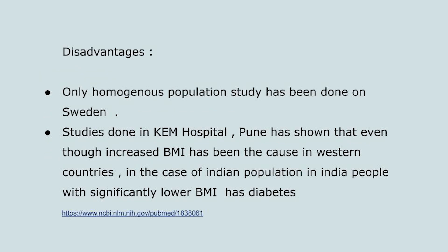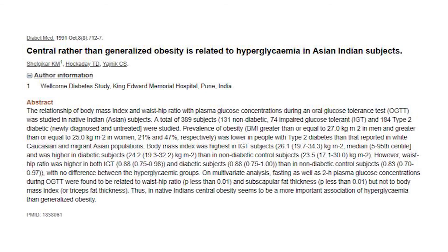A disadvantage is that this is a homogeneous population study done in Sweden, whereas diabetes is a heterogeneous disease worldwide. For example, a study done in Pune, India, showed that Indian patients had more visceral fat and higher body fat percentage compared to Caucasians of similar BMI, making them more susceptible to diabetes. Therefore, we need to think in a broader aspect.